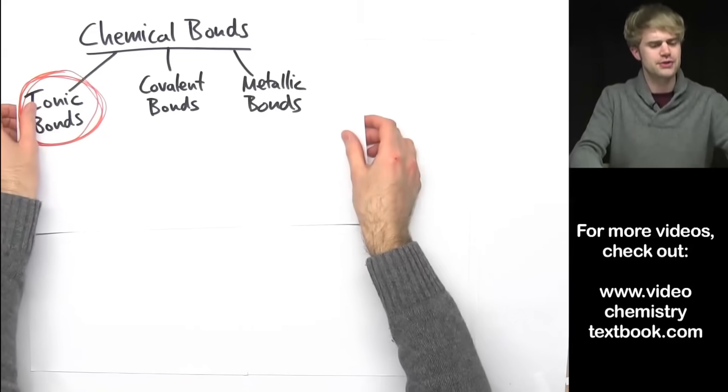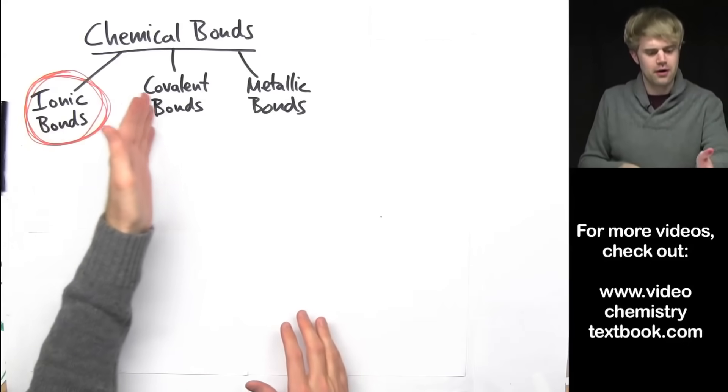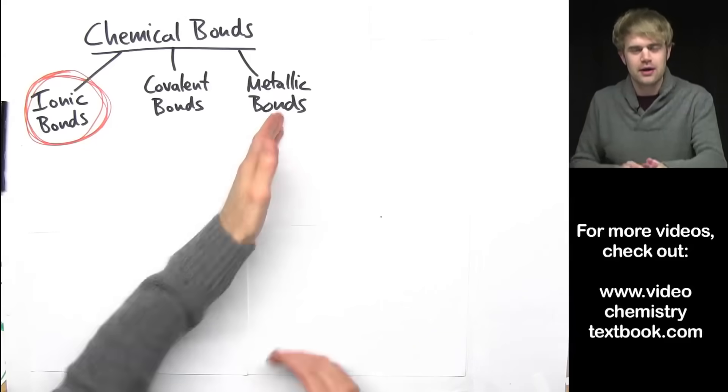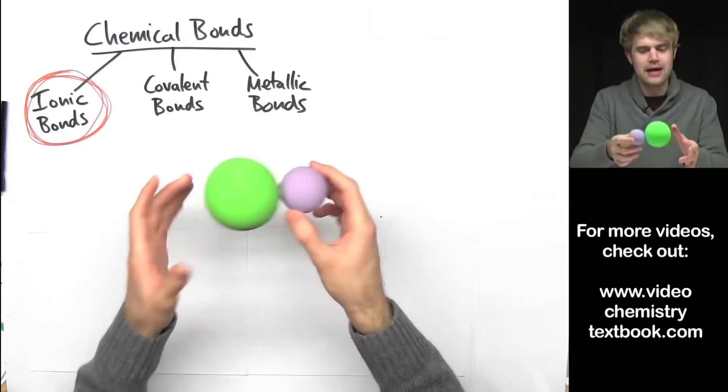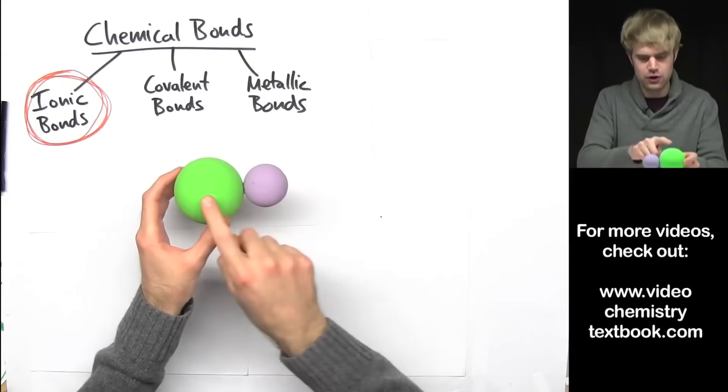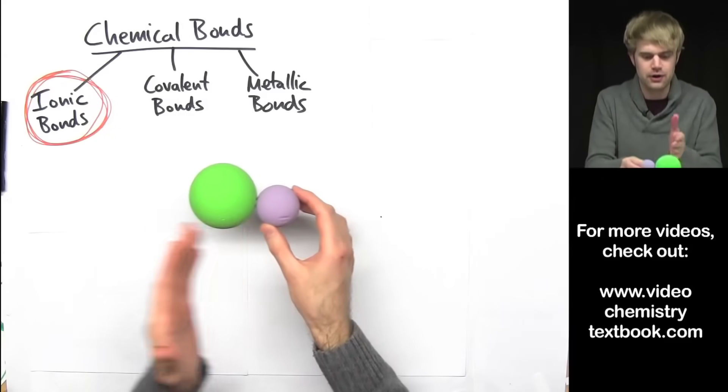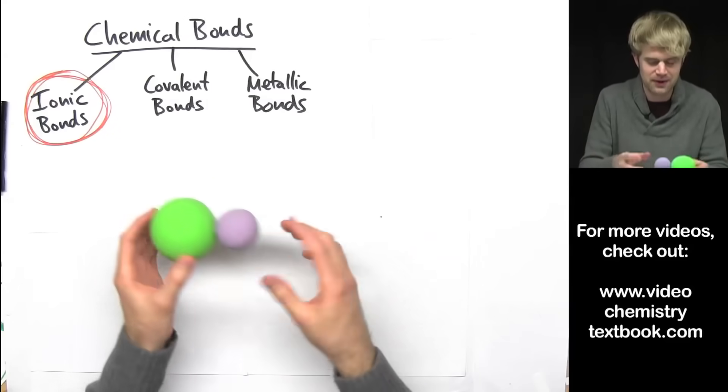So, ionic bonds are one type of chemical bond. Chemical bonds are like glue that holds atoms together, like here are two atoms that are bonded together, they're connected, they're glued.